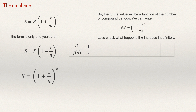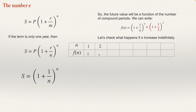Let's see what happens if n equals 2, compounding on a semi-annual basis. The function will be (1 + 1/2)^2, which is 1.5 squared, giving 2.25. So the value increased. At that moment we might think that if it compounds many times, the value will keep increasing indefinitely — but that's not true.